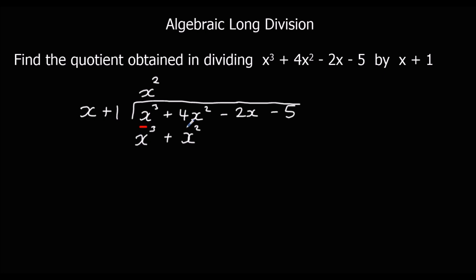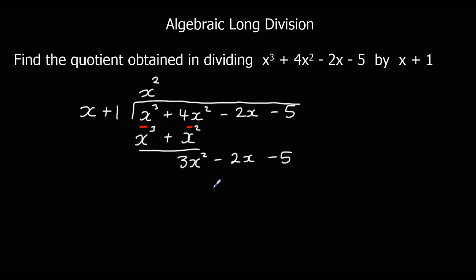Now we do a subtraction. x cubed minus x cubed is nothing — it's gone. 4x squared minus 1x squared gives us 3x squared. Then we bring down the rest of what's left, so we now have 3x squared, and 3x squared divided by x gives us 3x.